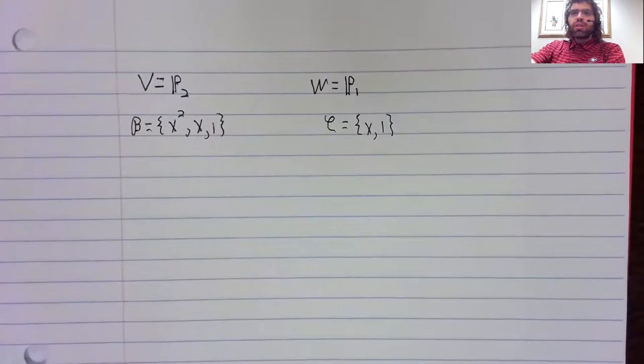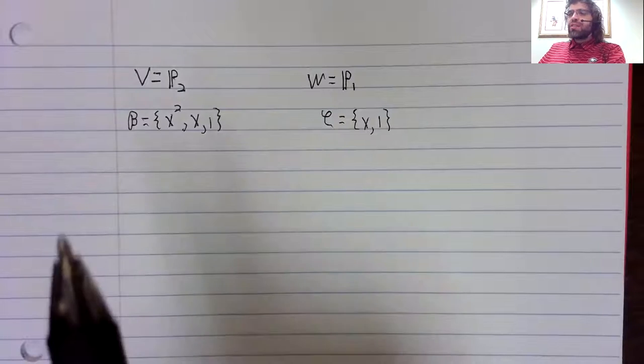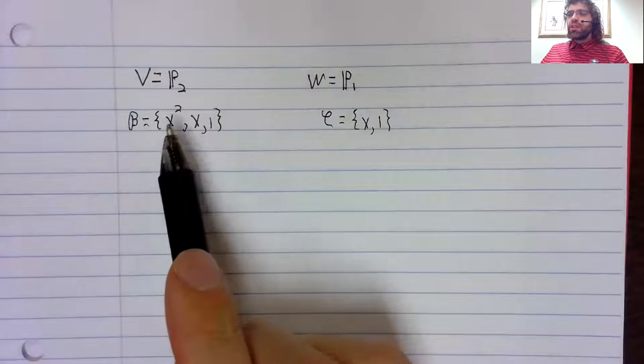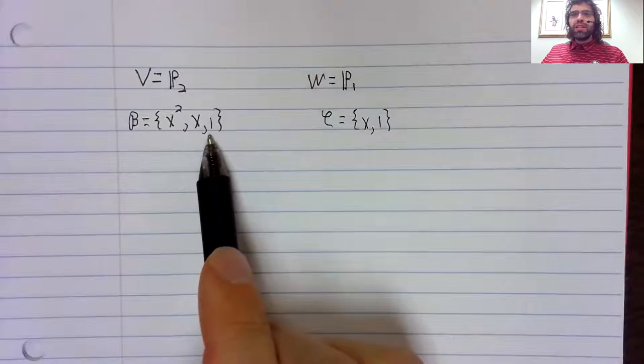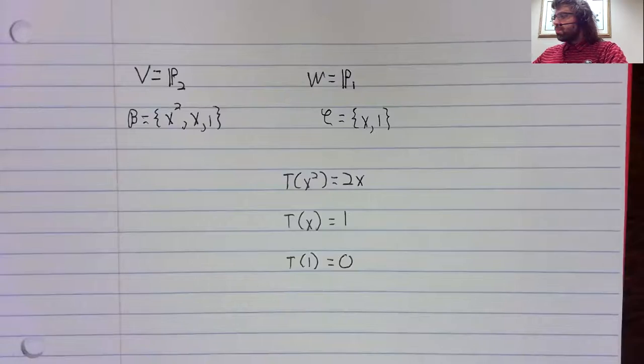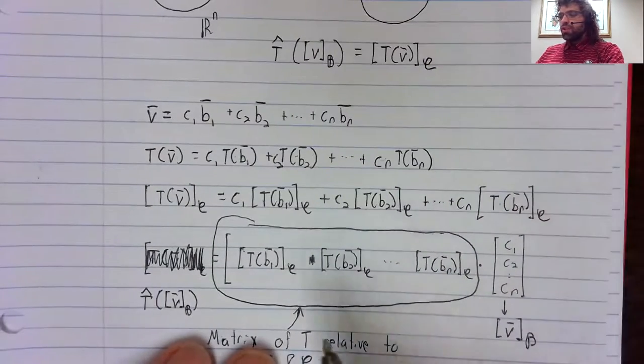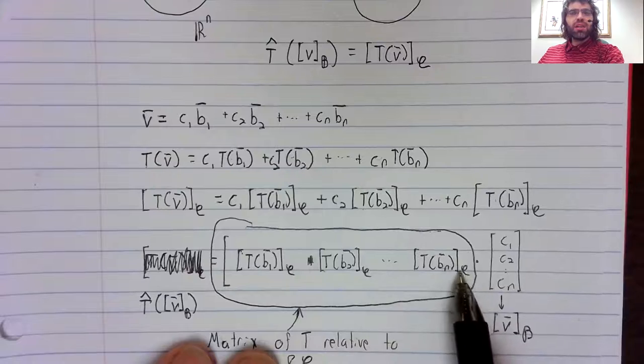And a lot of this work is going to be the same as the work we just did. We're going to need T of B one, T of B two, T of B three. But now you see we have the coordinate vectors with respect to C.